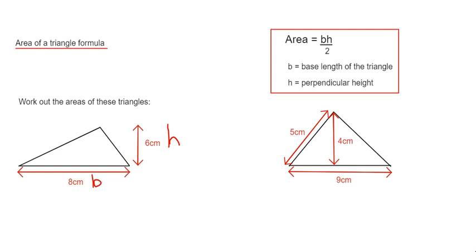So if you put these two numbers in our formula, it will be 8 times 6 divided by 2. So 8 times 6 is 48, and if you divide that by 2, that gives us 24 centimeters squared.